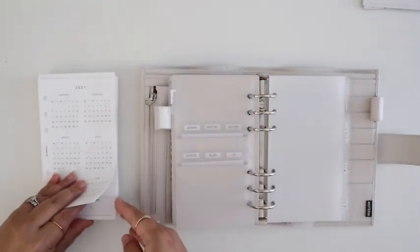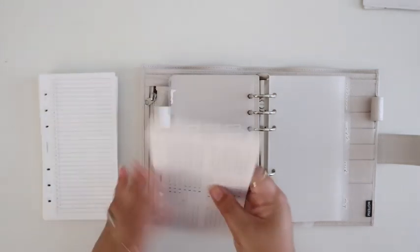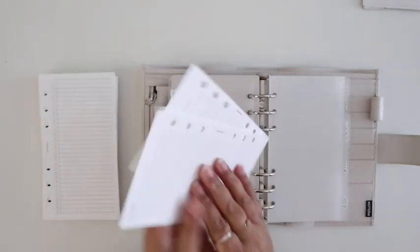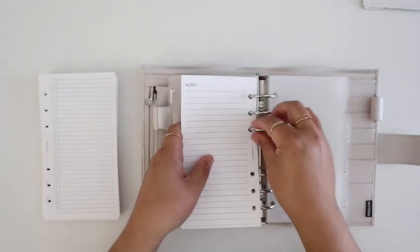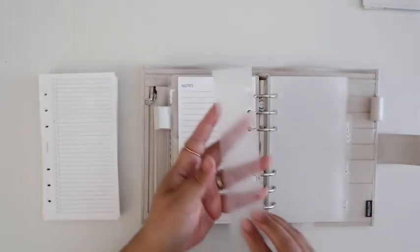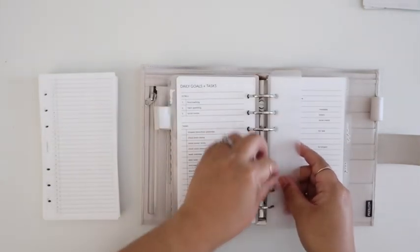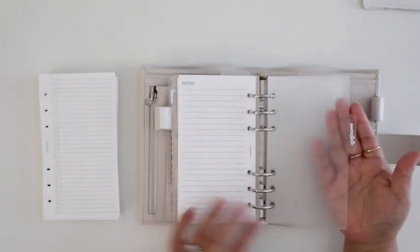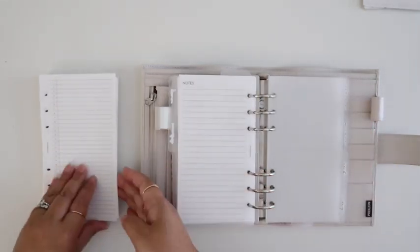So in the front tab, the year tab, I add my year at a glance calendar and my goals inserts, which I've shown you before many times. I also have a bookmark there, which I bookmark whatever I'm planning, like my day or my week.